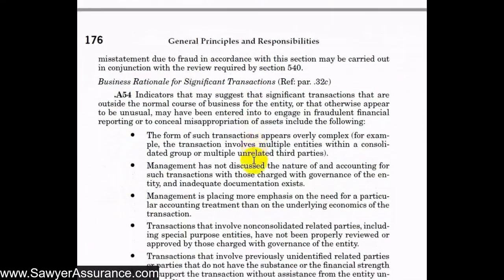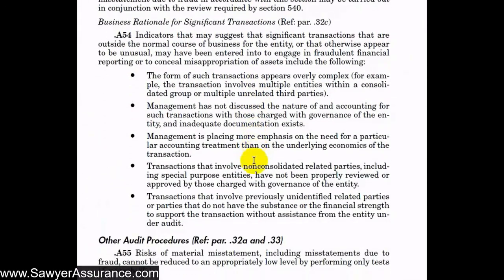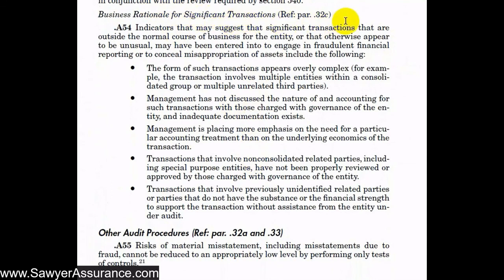Regarding the review of journal entries, we also want to look at the business rationale for significant transactions. If there is no business rationale for a transaction, it might be indicative of a risk of fraud. Transactions that are outside the normal course of business or that appear unusual for the type of entity might be indicative of fraudulent financial reporting or a way to conceal misappropriation of assets. Examples of how we might identify such transactions include those that appear overly complex — involving several entities, a consolidated group, or multiple unrelated third parties — making it hard to understand what is actually happening.